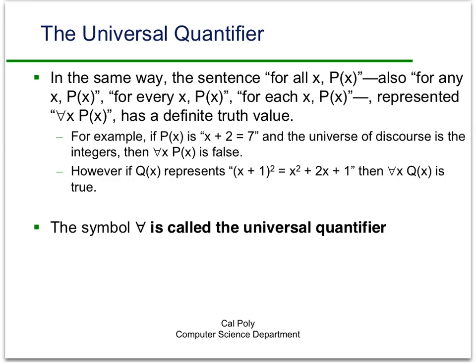In the same way, if we look at a different kind of statement — 'for all x, P(x)' — we have the universal quantifier. This can also be read as 'for any x, P(x),' 'for every x, P(x),' or 'for each x, P(x)' — all different ways of saying the same thing. This states that for all possible x values in the domain of discourse, P(x) is going to be true. This quantified statement has a definite truth value: it is true if P(x) holds for every x in the domain, and false if even one x fails.